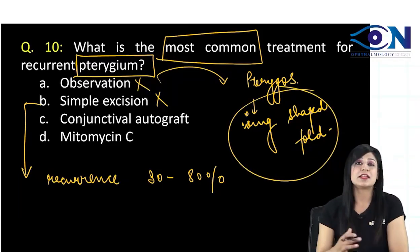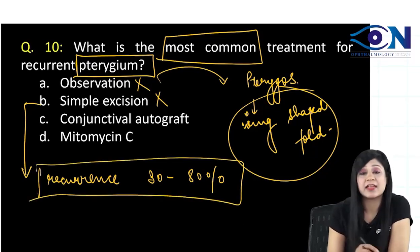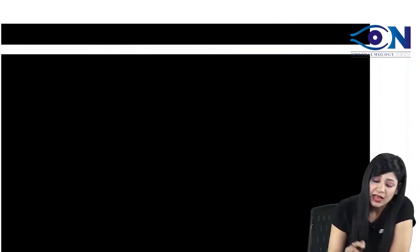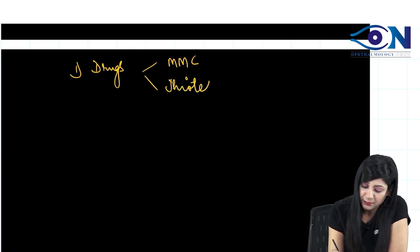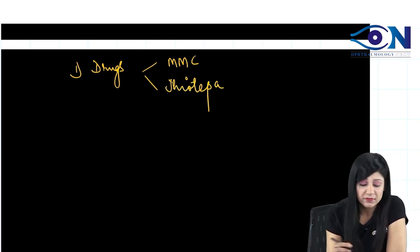There are certain things that we are doing in order to reduce the recurrence. What are the things I can do? I can give certain drugs. In these drugs, we can give mitomycin C, we can also give thiotepa.